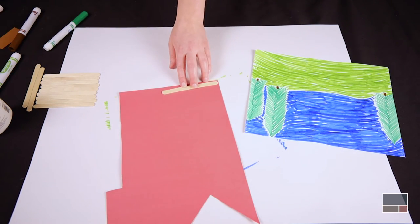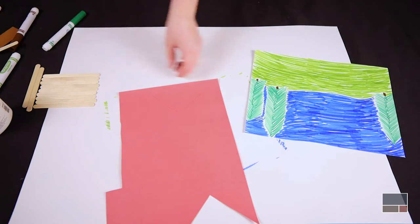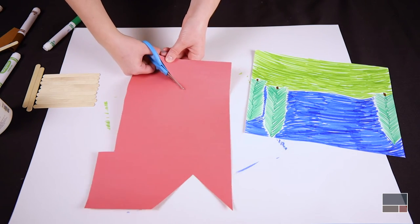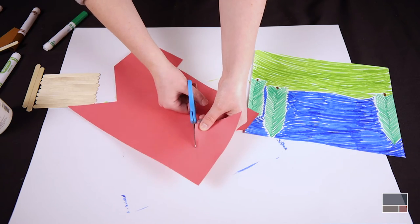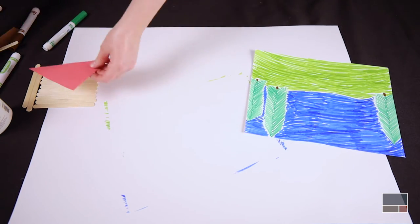Cut out a roof for your lodge. You can use the paper provided or use colored paper or other materials that you have at home. You can also decorate your roof. Maybe your roof has shingles or sparkles or even a cat sitting on top.